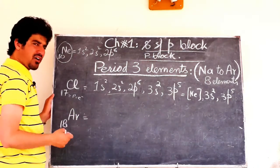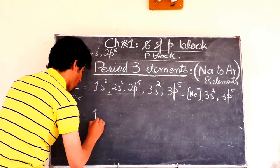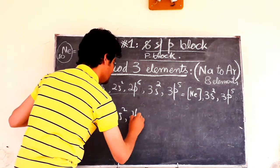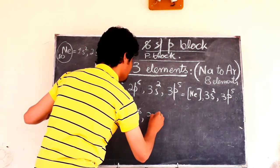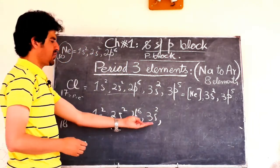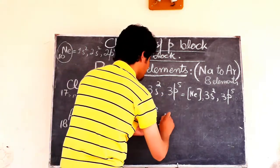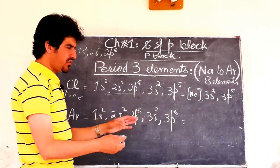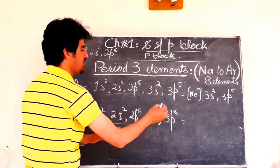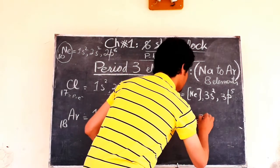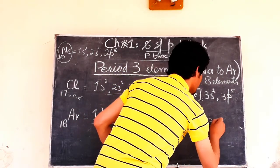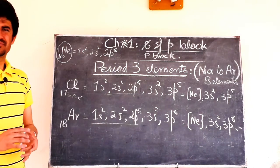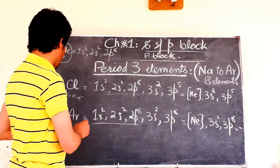Finally, argon is the last element of Period 3. Argon, atomic number 18: 1s², 2s², 2p⁶, 3s², 3p⁶. Using noble gas notation: [Ne] 3s², 3p⁶. Argon completes the third period with a full 3p sub-shell.